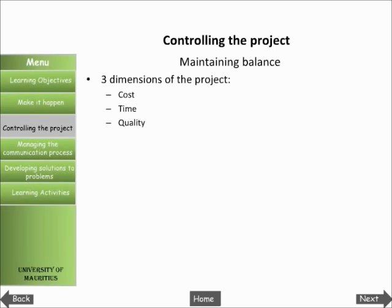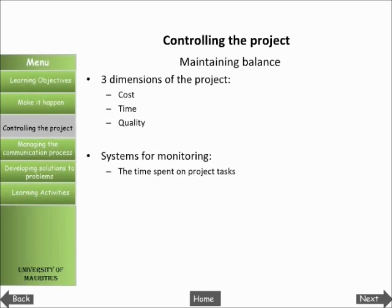Many of the difficulties in implementing a project are caused by poor time management. This will have a direct effect on the costs of the project, as well as on the quality of what is achieved. So there need to be systems for monitoring the time spent on project tasks, the resources used — that is people, materials, and equipment — and compliance with applicable quality standards.